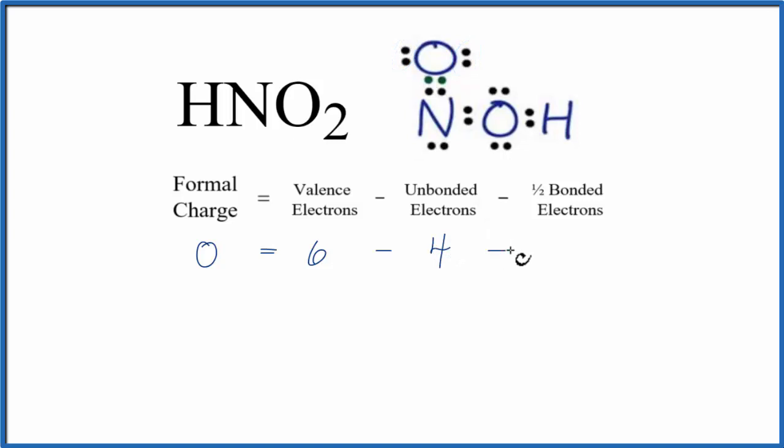And then we'll subtract one half of the bonded valence electrons. These are the electrons involved in chemical bonds. So we have a double bond here between the oxygen and the nitrogen. So we have two, four bonded valence electrons. So six minus four is two, minus two, that's zero. So the formal charge on this oxygen is zero.